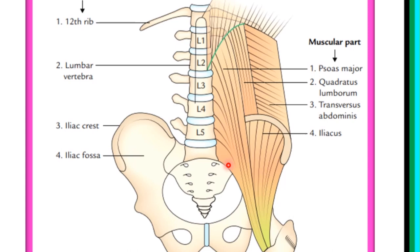For muscles above the iliac crest, running from the medial part to the lateral part, the first one is psoas major, followed by the quadratus lumborum lateral to it, and then the transversus abdominis muscle lateral to the quadratus lumborum. For the group below the iliac crest, we'll see the distal extension of psoas major running inferiorly to its insertion, and then lateral to it is the iliacus — the muscle forming the layer in the iliac fossa.